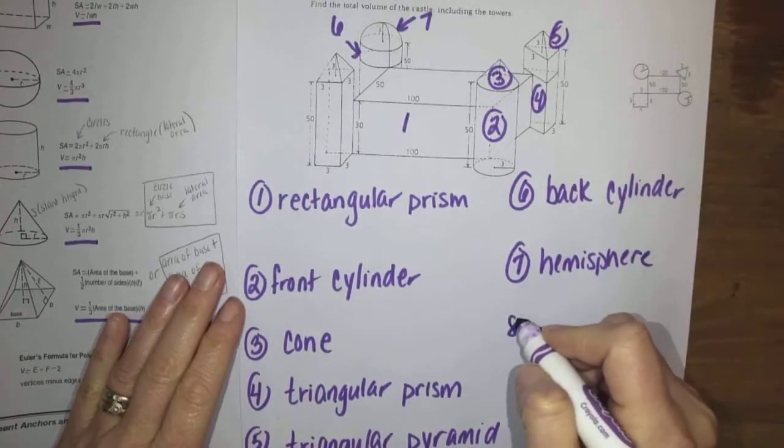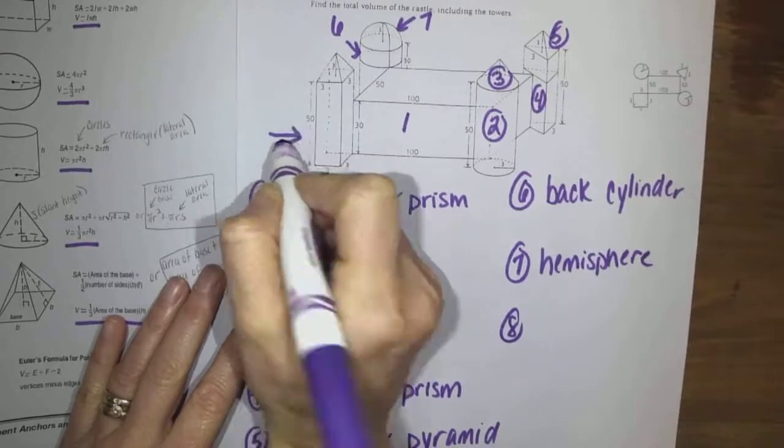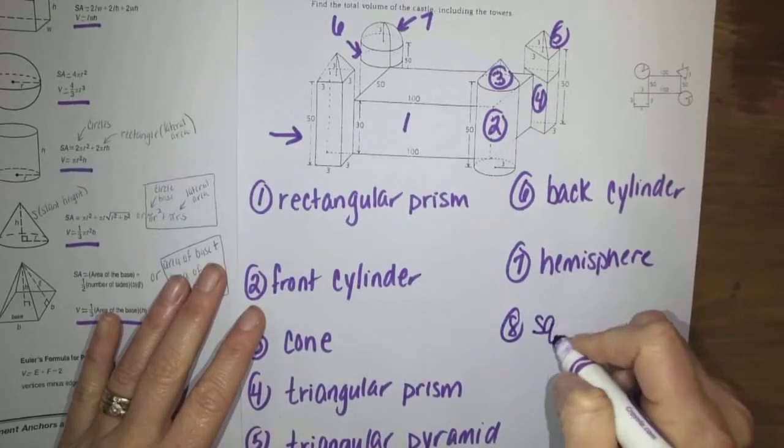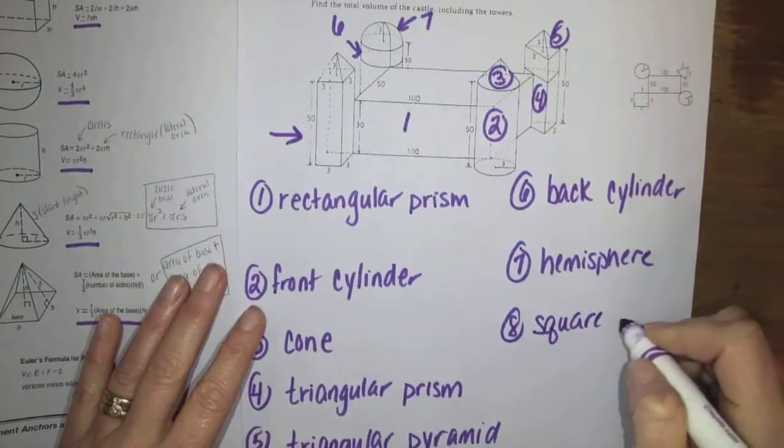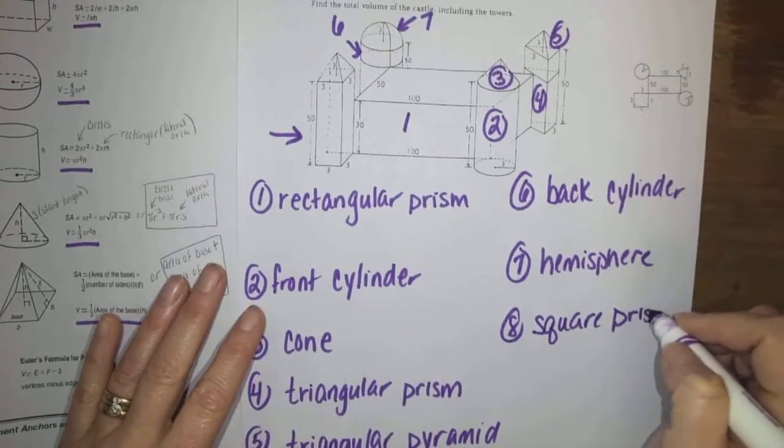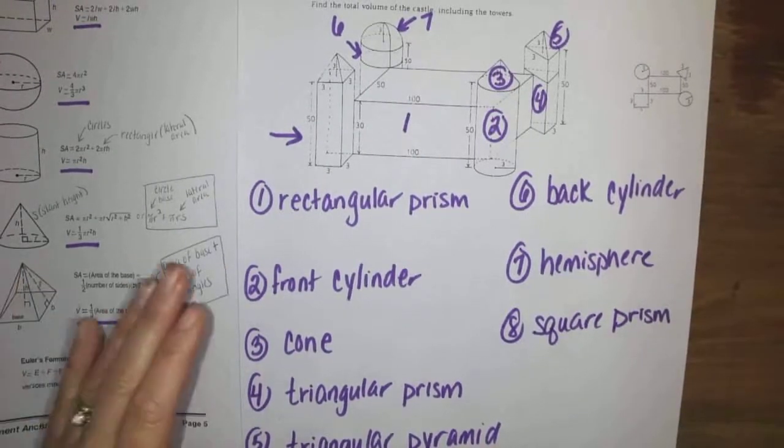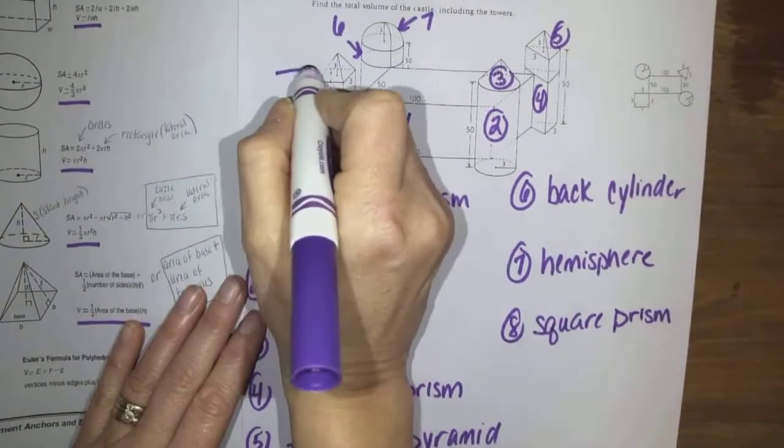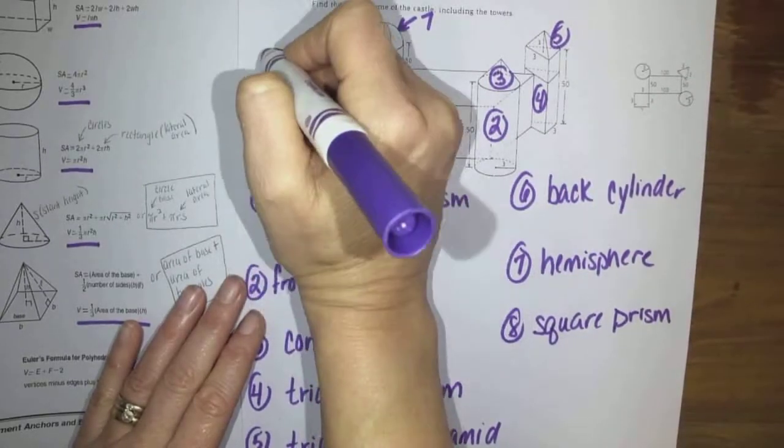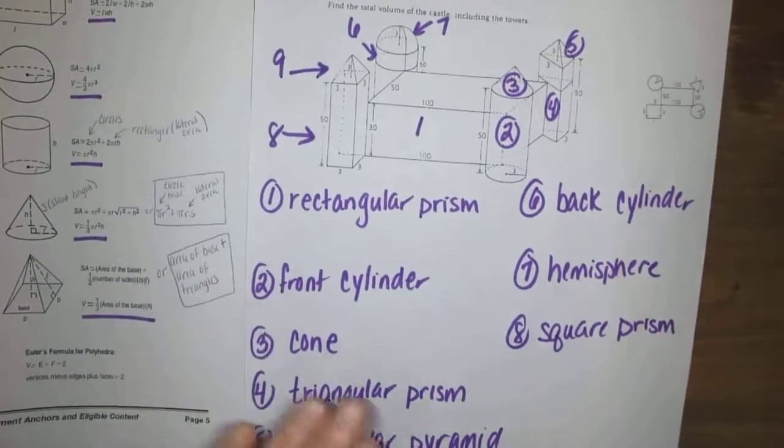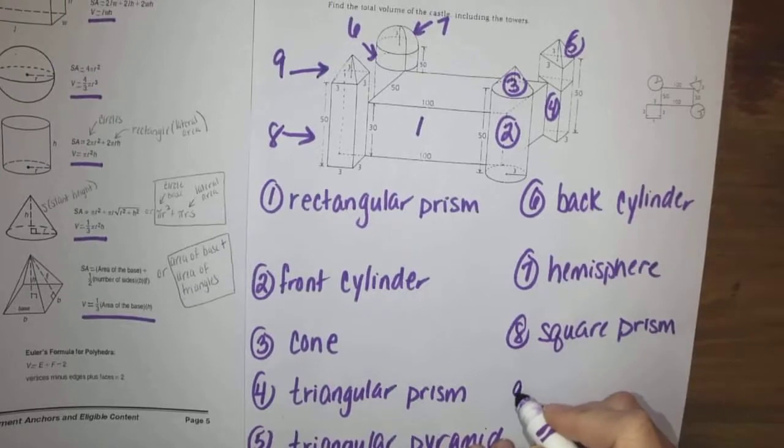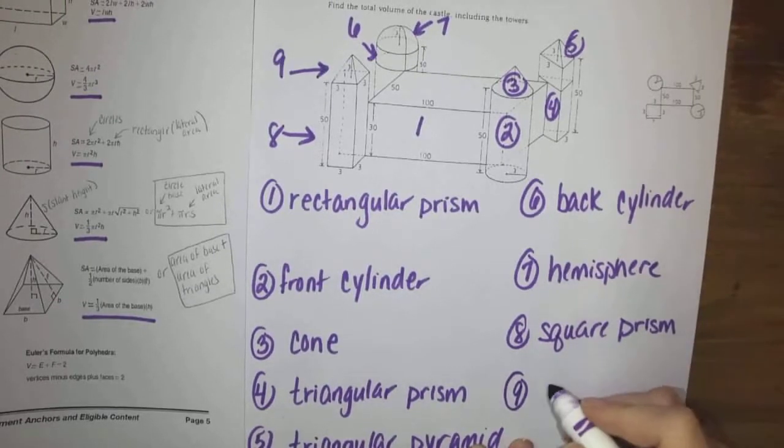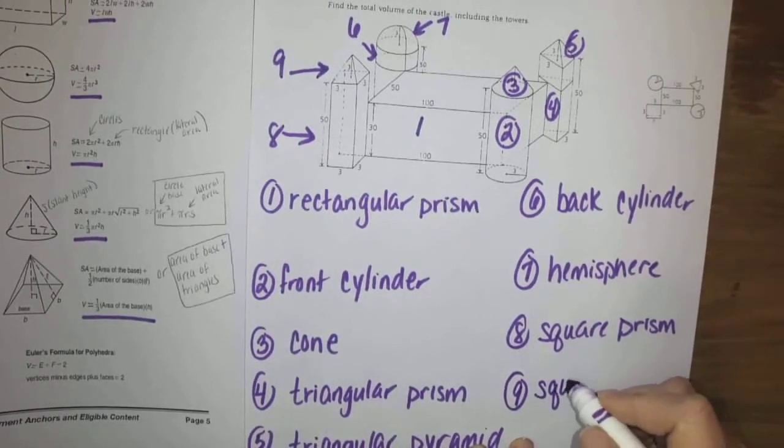Number eight, right here, this would be a square prism or box if you're okay with that. And on top of that, so that's number eight. And on top of that, the very last one, number nine, that would be a square pyramid.